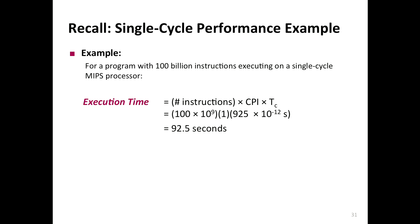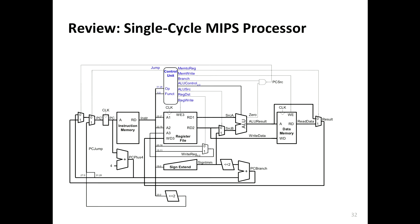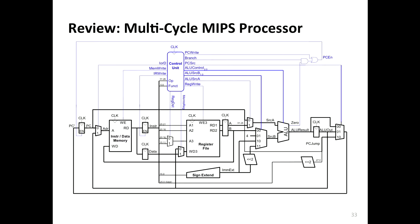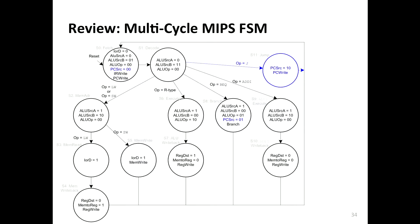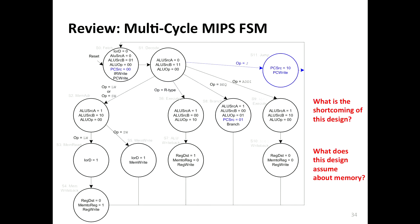Now, a key shortcoming of this multi-cycle MIPS FSM design: it assumes memory completes in one cycle. The fetch state, memory-access state, and one other state all complete in one cycle — which sounds bad if your memory takes longer. You want to enable different types of memories to be plugged in. The solution: instead of assuming memory takes one cycle, wait for the memory. Add a loop in the state machine — if memory is not ready, loop; if ready, proceed.